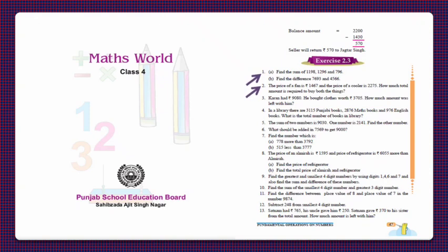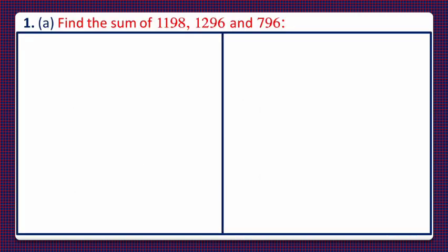Hello dear students, today we will do exercise 2.3 of class 4 maths world. Today we will solve question number 1 and 2. Question number 1a part is: find the sum of 1198, 1296, and 796.